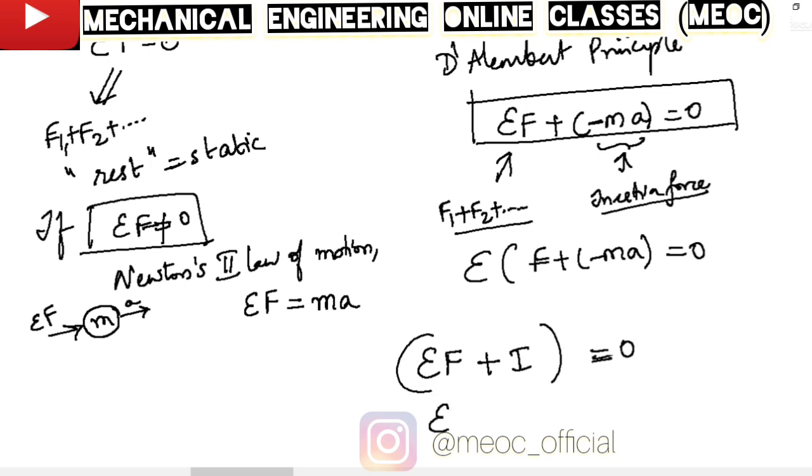but because the sum of external forces is not zero, the particle has an acceleration A. Because it is in the form of sum of different forces equal to zero, that is coming under equilibrium, but because the particle is in motion, it is called dynamic equilibrium.